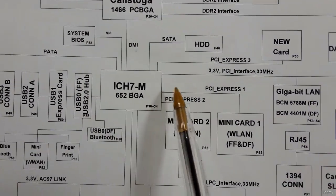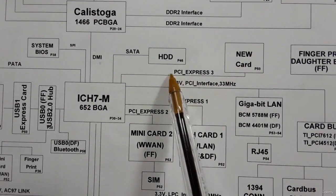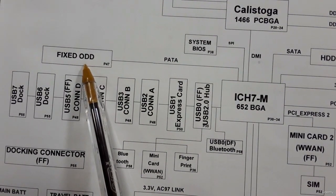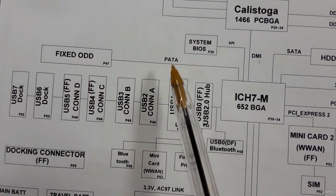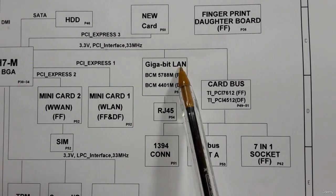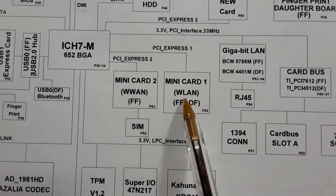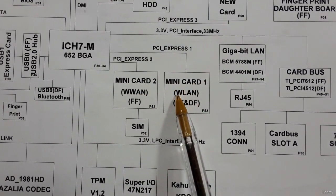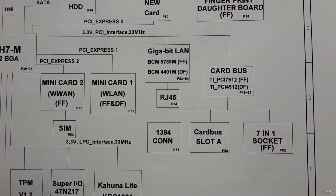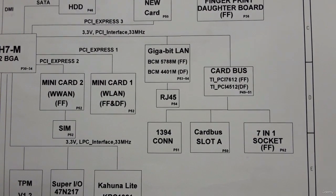The ICH is also connected to new cards via PCI Express, and to the ODD or optical disk drive. It is also connected to the LAN card on the motherboard, to the card bus, and to a mini card for LAN and a mini card for wireless. The LAN port connects to the RJ45 connector.